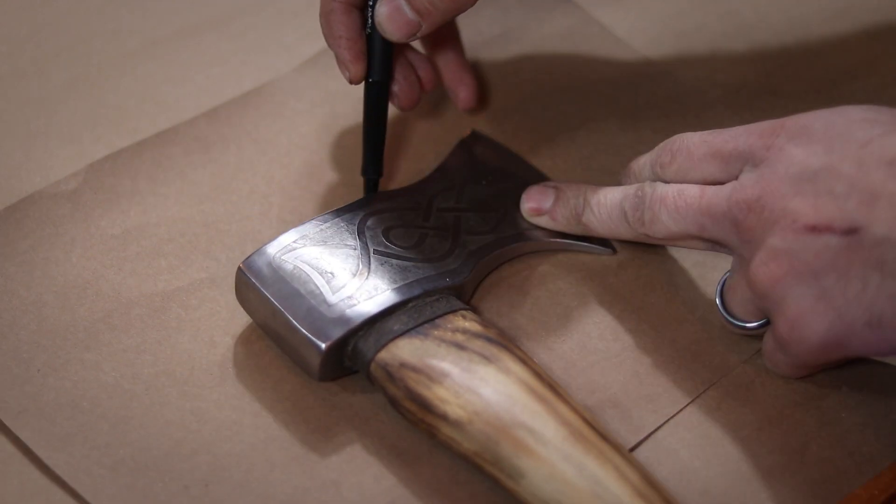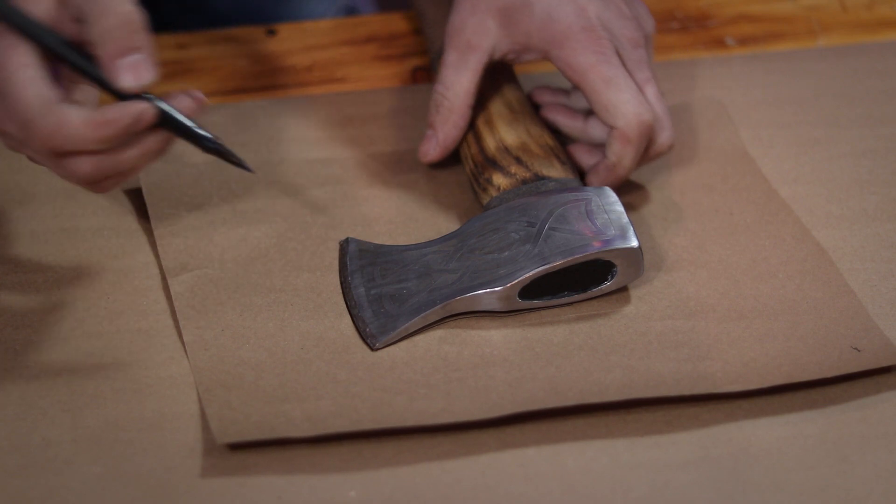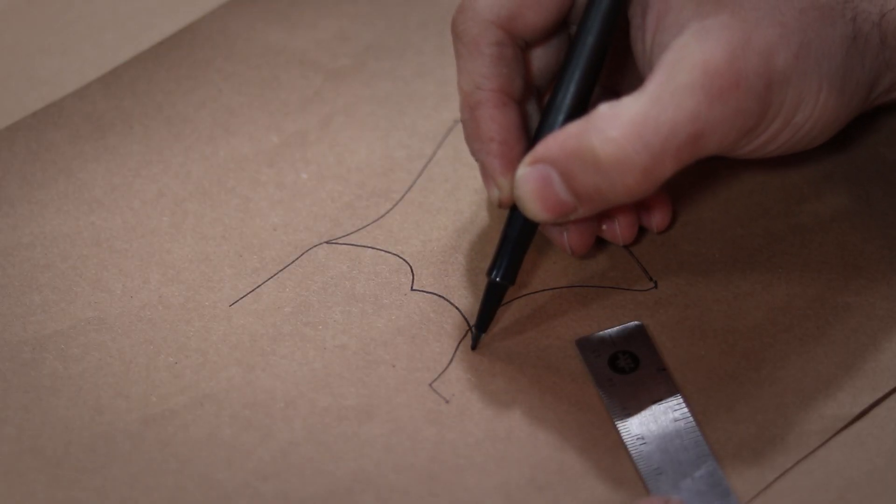So I start by laying the hatchet down on some paper and tracing out the front portion that I want to be covered. Using that tracing as my guide, I start drawing in what I want the sheath to look like.